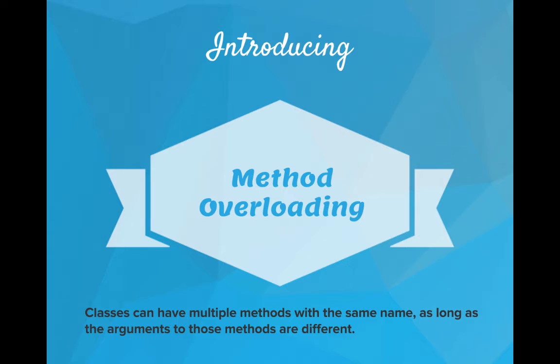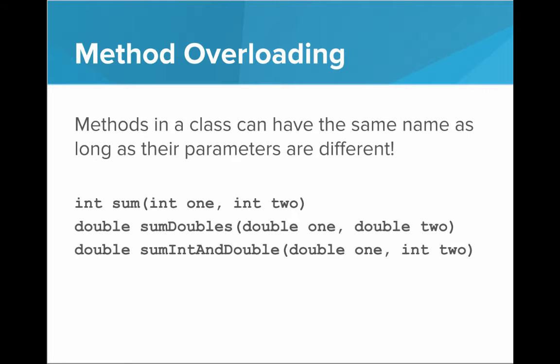Well, introducing method overloading. Turns out, in Java, classes can have multiple methods with the same name, as long as the arguments to those methods are different. So, method overloading is that methods in a class can have the same name as long as their parameters are different.